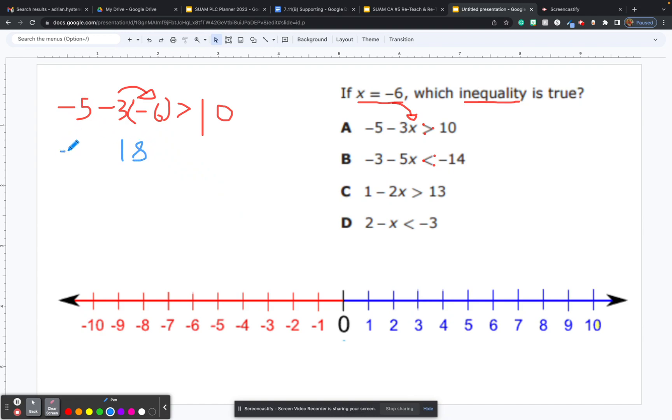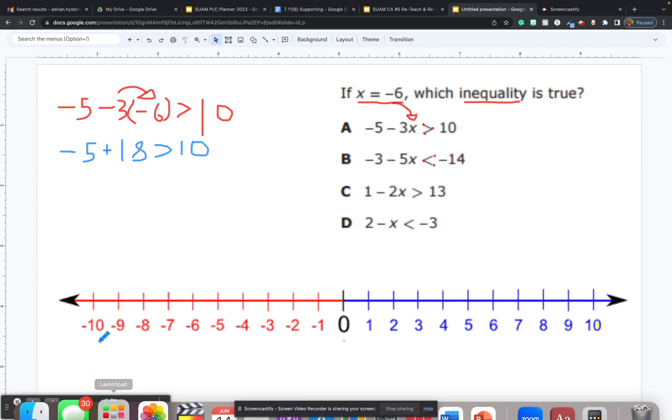I'm just going to bring down the rest of what I have. I have negative 5 and a positive 18 is greater than 10. I'm going to switch colors again for each line. Negative 5 plus 18 creates 13.